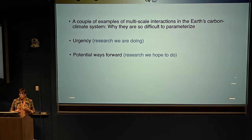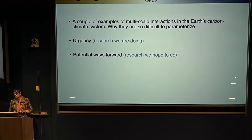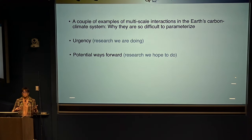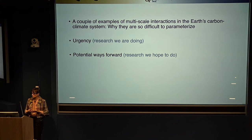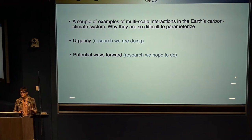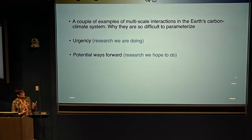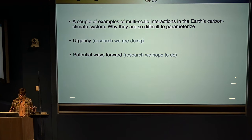I want to give you a couple of examples of what the multi-scale interactions in these complex systems are, and why it's urgently needed to try to do something about it. Also, what may be the potential way forward — looking at projects that may be a little bit pie-in-the-sky — but why we really need to get together as scientists and try to understand how the climate and the carbon cycles interact.